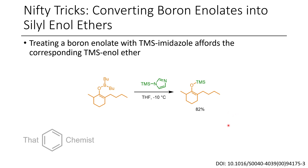One really useful trick: if you want a TMS enolate but are having trouble preparing it, you can make the boron enolate — in this case via conjugate addition to access the more substituted one — and then treat it with TMS imidazole. There's a great paper showing you can convert boron enolates to TMS enolates in good conversion under really mild conditions. This can be easier than doing the triethylamine reflux in DMF with TMS chloride, as it affords a single product.